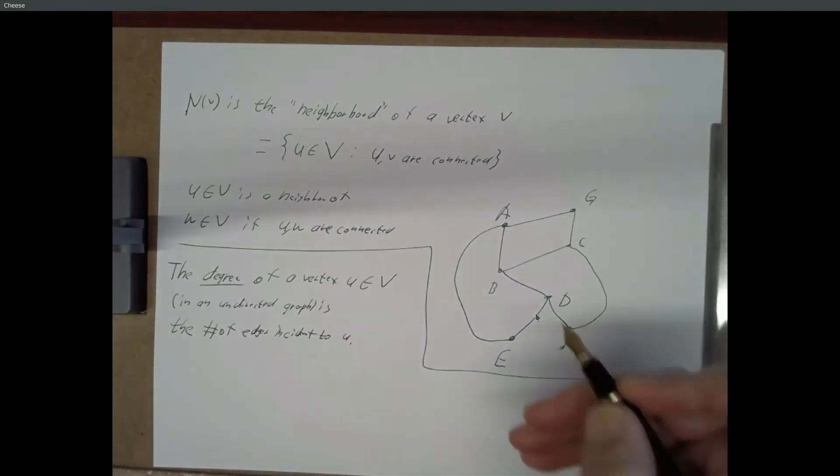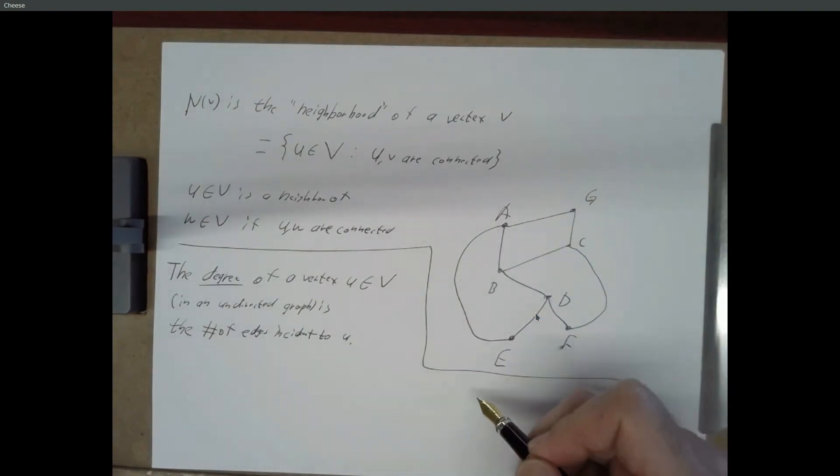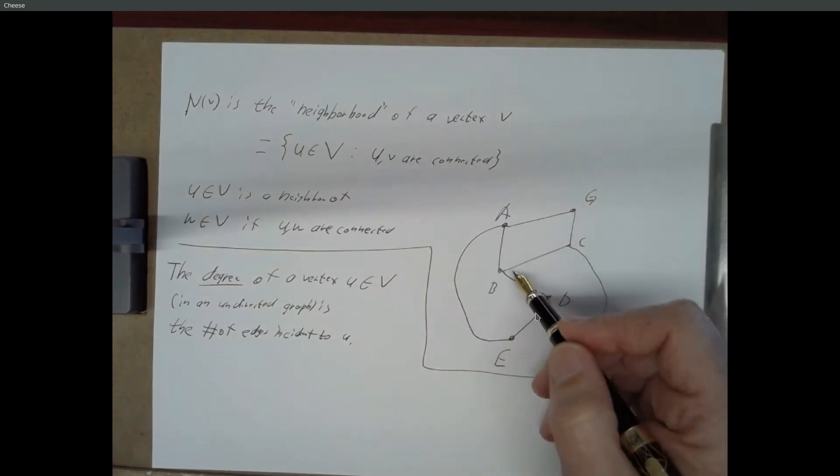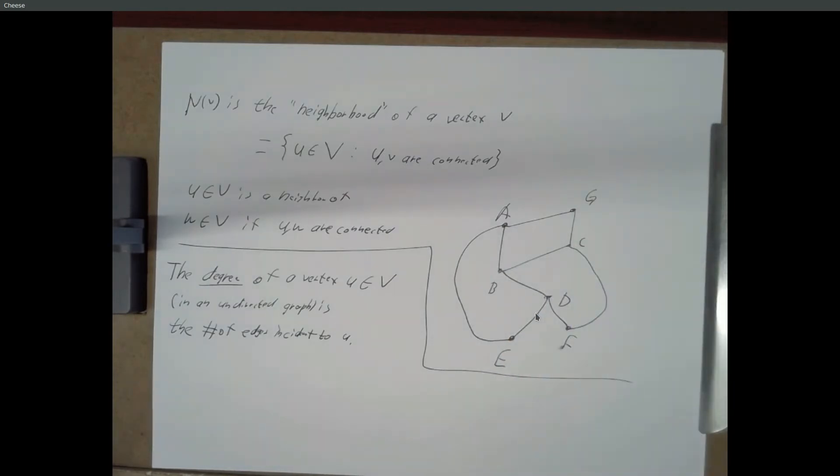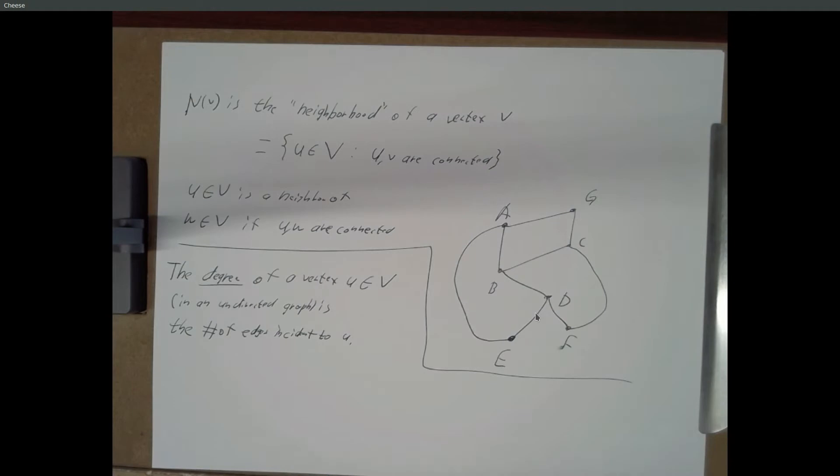So, the degree of A would be one, two, three, because there's one, two, three edges touching A. The degree of B would also be three, because we've got one edge, two edge, three edges. The degree of E would be two, because we have two edges, one here and one here. Make sense?